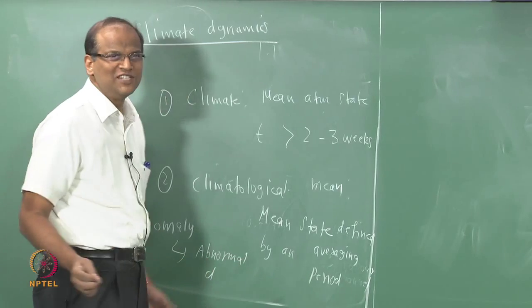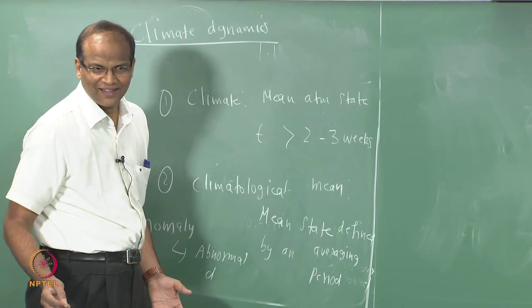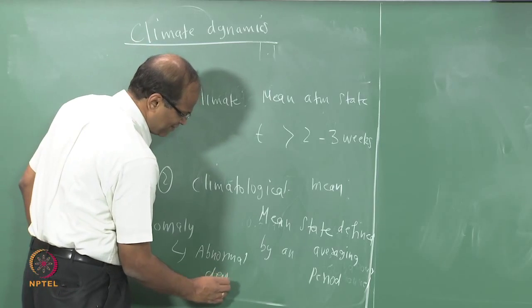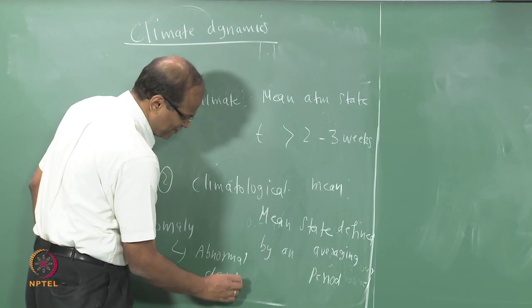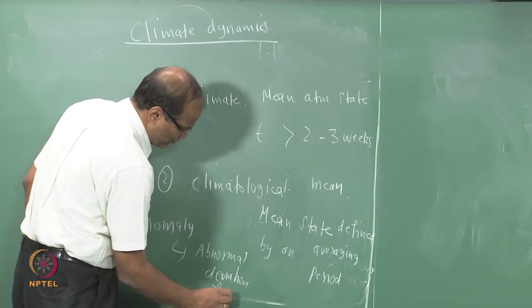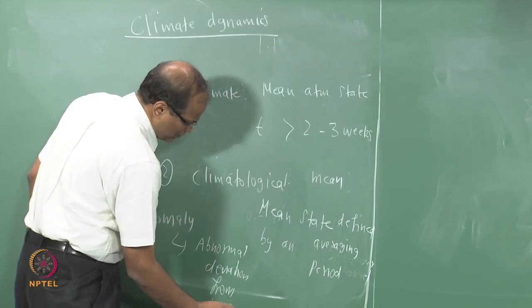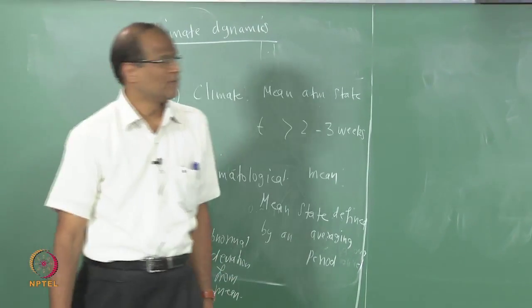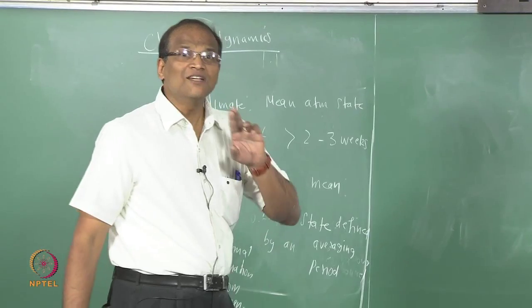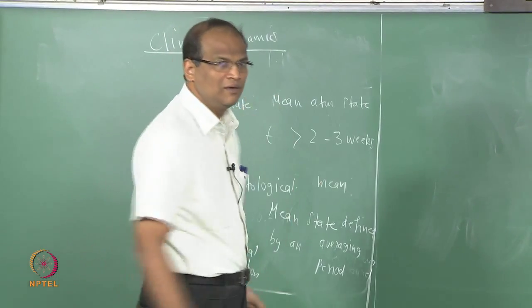Suppose it snows in Chennai — that would be an anomaly. As opposed to anomaly, what is climate variability?